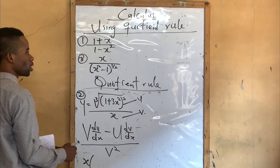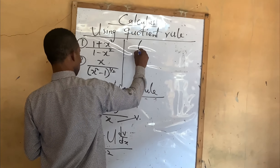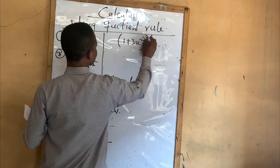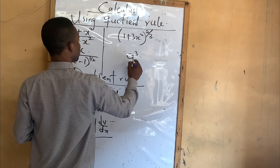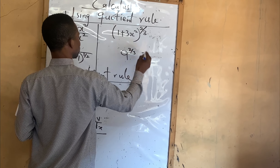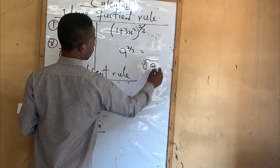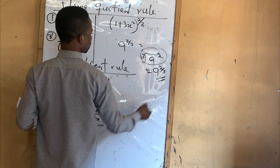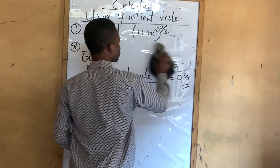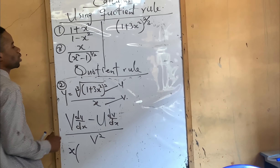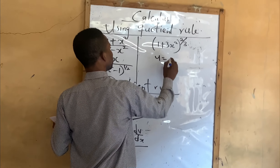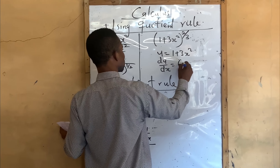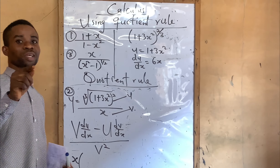To differentiate the cube root of (1 plus 3x squared), I rewrite it as (1 plus 3x squared) to the power 1 over 3 — wait, that is to the power 2 over 3 by laws of indices. I let u equal (1 plus 3x squared), so du/dx equals 6x. And y equals u to the power 2 over 3. So dy/du equals 2 over 3 times u to the power 2 over 3 minus 1, which is u to the power minus 1 over 3.